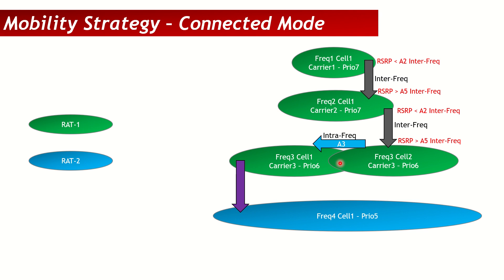All these thresholds come with hysteresis as well. Assuming hysteresis is 0, the configured values are the effective thresholds. If A3 is 2 dB and hysteresis is also 2 dB, then the target cell must be A3 plus hysteresis — that is 4 dB — better than the serving cell. So if the serving cell is at -100 and the target is above -96, a handover will be triggered.